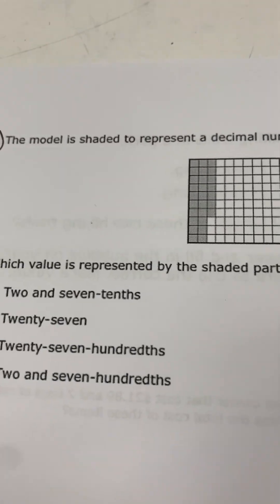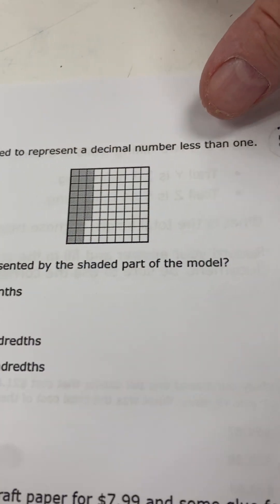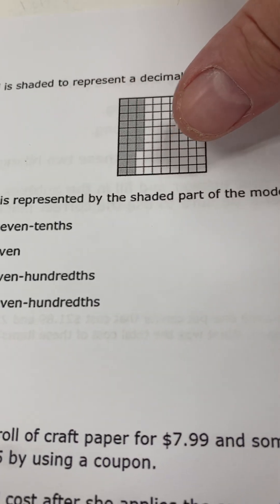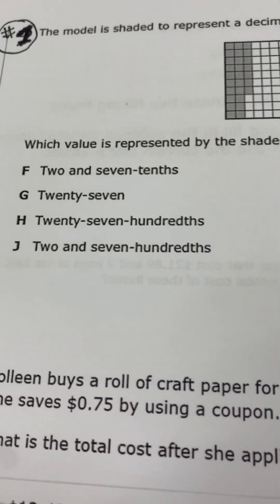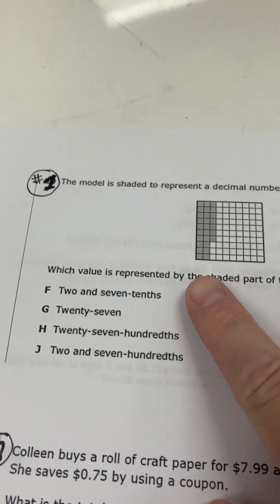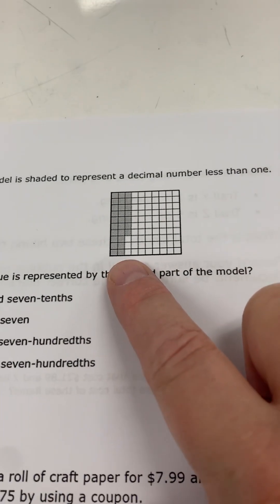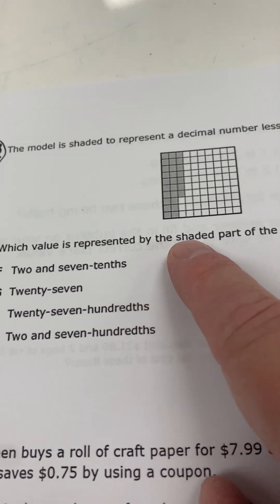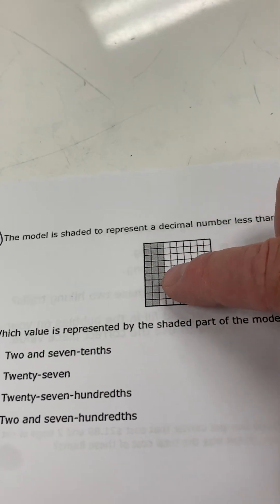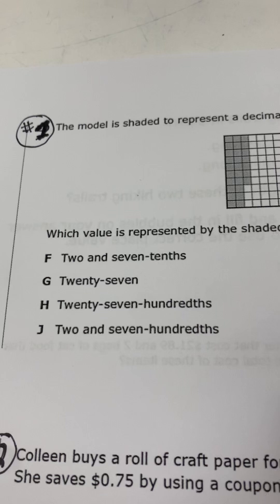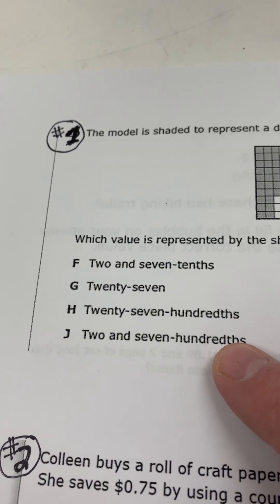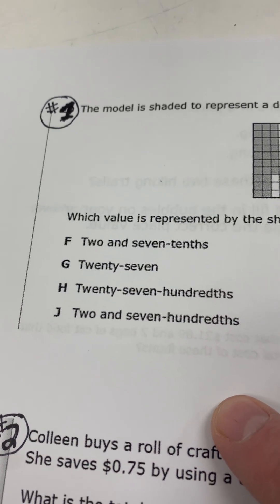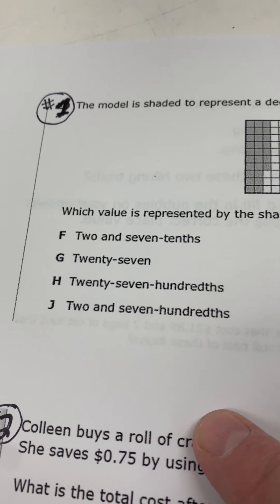The model is shaded to represent a decimal number less than one. Which value is represented by the shaded part of the model? Okay, there are your answers. Two and seven tenths, 27, 27 hundredths, or two and seven hundredths.